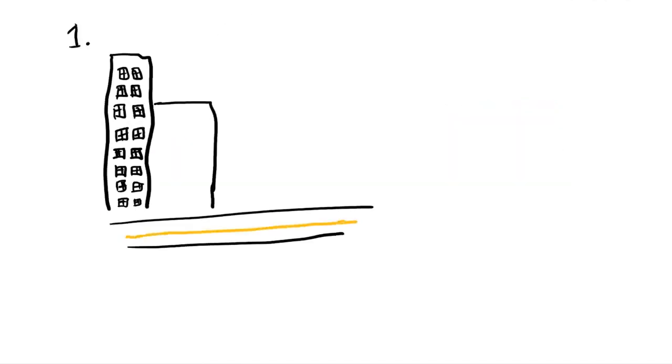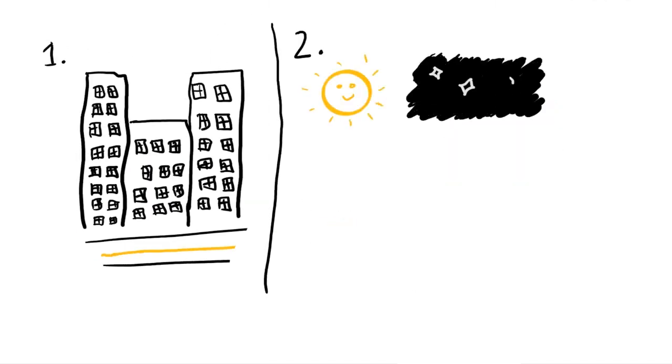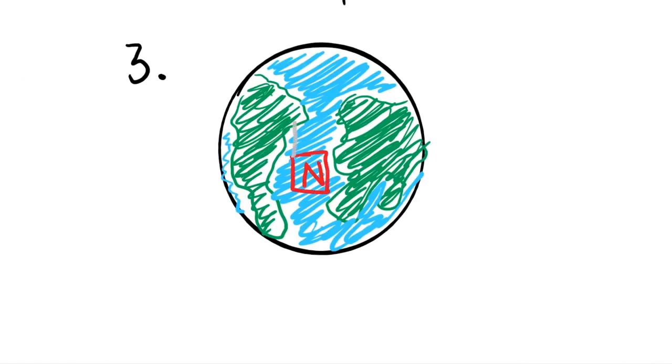Birds use landmarks, the position of the stars and the sun, and the most interesting, in my opinion, the Earth's magnetic field in order to navigate. So what sort of magical quantum compasses do birds possess?